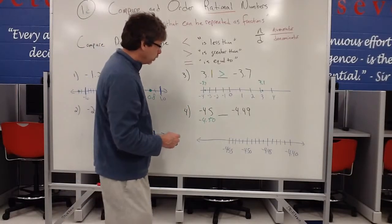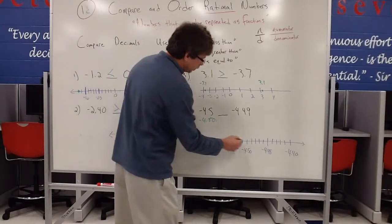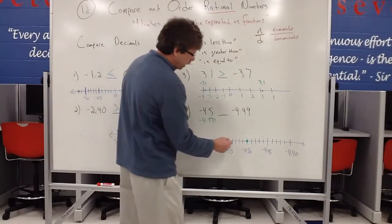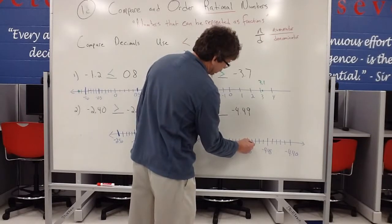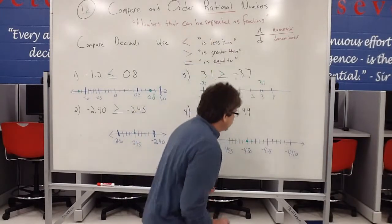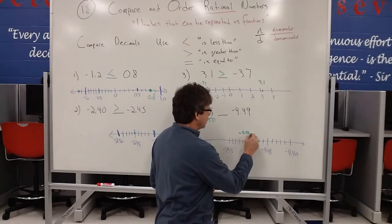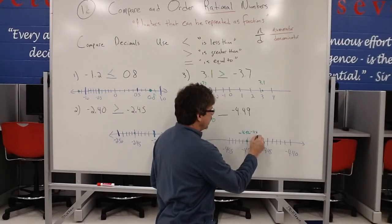So negative 4.45 or negative 4.50, that would be located here. And negative 4.49, that's going to be located here. So I have negative 4.50 and I have negative 4.49.